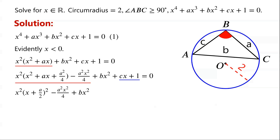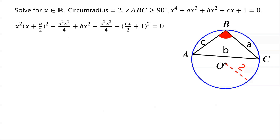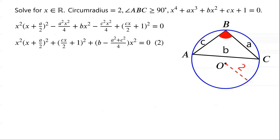We keep minus a squared x squared over 4 plus bx squared unchanged. Similarly, for cx plus 1, we add c squared x squared over 4 and subtract c squared x squared over 4, so that c squared x squared over 4 plus cx plus 1 can be written as (cx over 2 plus 1) all squared. The remaining terms — negative a squared x squared over 4 plus bx squared minus c squared x squared over 4 — can be written as (b minus (a squared plus c squared) over 4) times x squared.